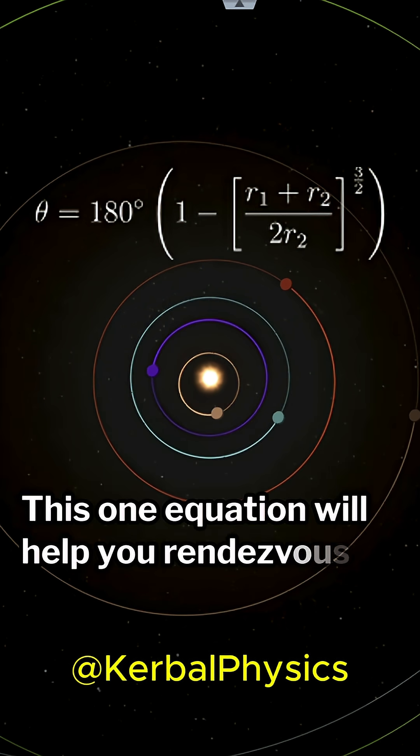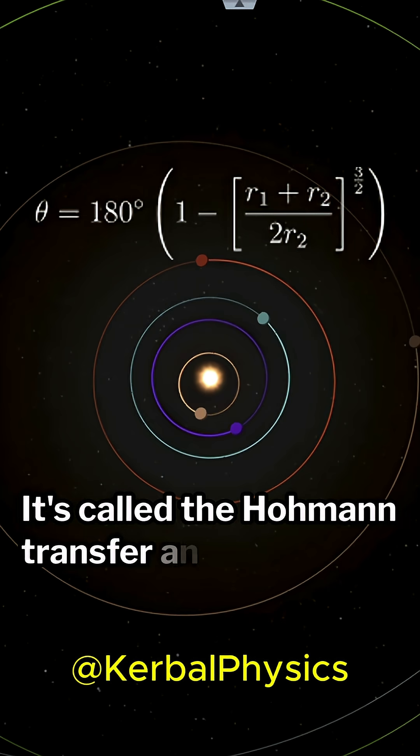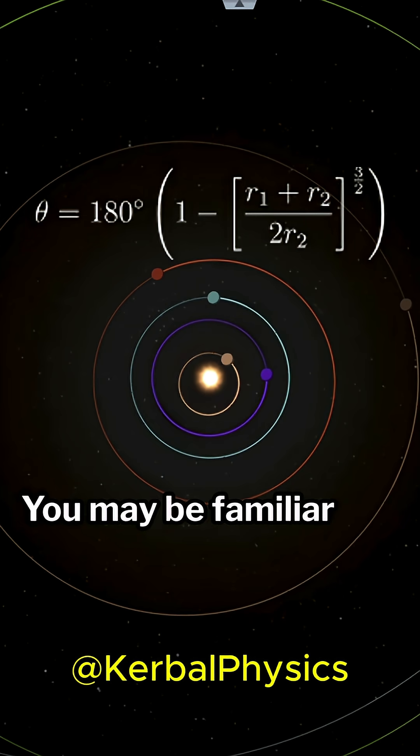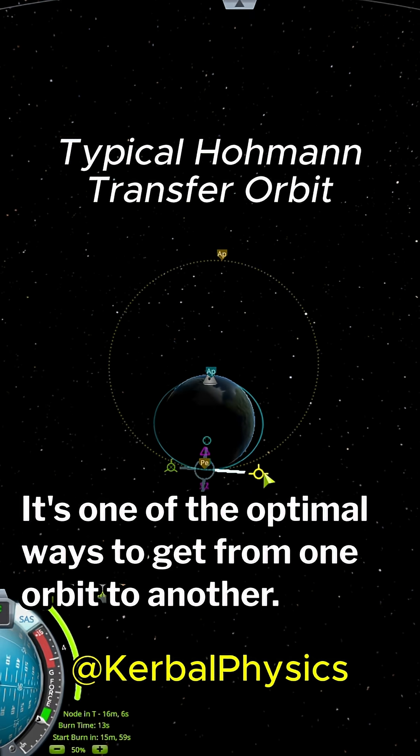This one equation will help you rendezvous with any orbital target. It's called the Hohmann Transfer Angle Formula. You may be familiar with the Hohmann Transfer. It's one of the optimal ways to get from one orbit to another.